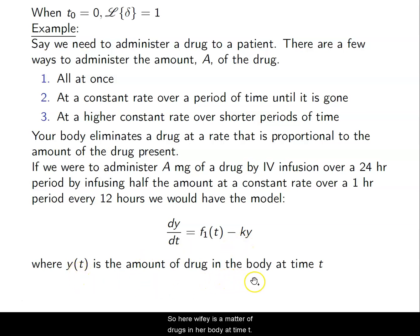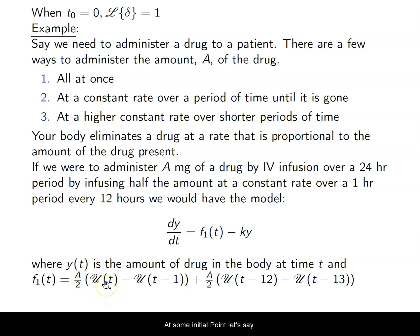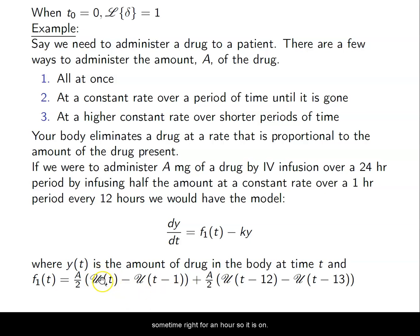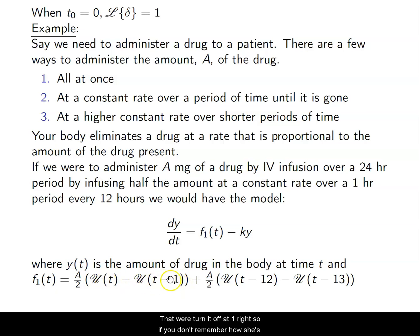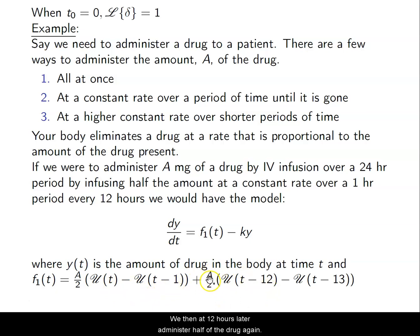Y(t) is the amount of drugs in our body at time T. Our function F1 is a piecewise function: we administer A/2 starting at time 0 for one hour, turning it off at t=1. Then 12 hours later we administer A/2 again, turning it off at t=13. If you don't remember how these unit step functions work, you can go back to section 7.3.